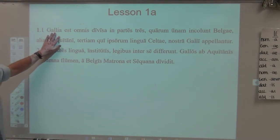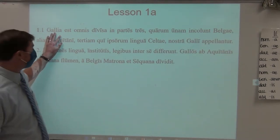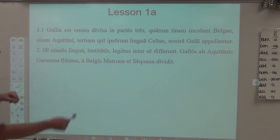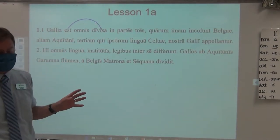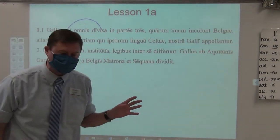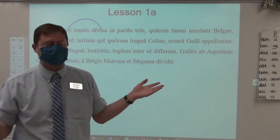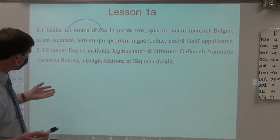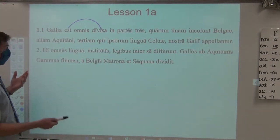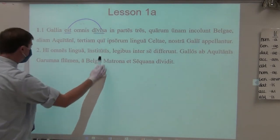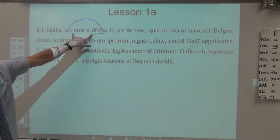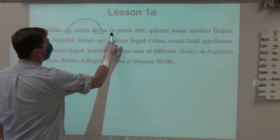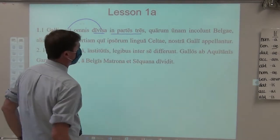Gallia est omnis divisa in partes tres. Gaul has been divided — though very often translations give the more idiomatic 'is divided,' even though technically that is not correct, because when you see 'est' paired with a perfect passive participle, it is creating a perfect passive verb. So: 'has been divided,' or 'was divided into three parts.'